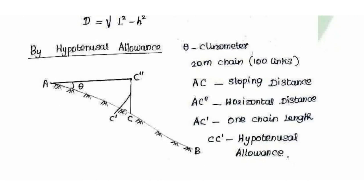Third is the hypotenusal allowance method. We measure A to B at the survey station. For each chain length from A to C, we apply a hypotenusal allowance correction in the field so that we can lay out the correct horizontal distance. This is the hypotenusal allowance method.